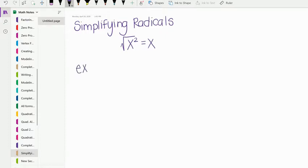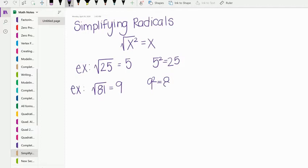We'll look at a few easy examples first. For example, if I want to find the square root of 25, it's just 5 because 5 squared is 25. If we want to find the square root of 81, it's 9, because 9 squared is 81. And the square root of 144 would be 12, because 12 squared is 144.